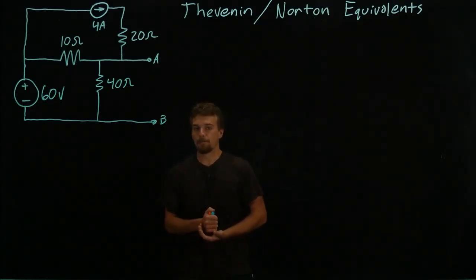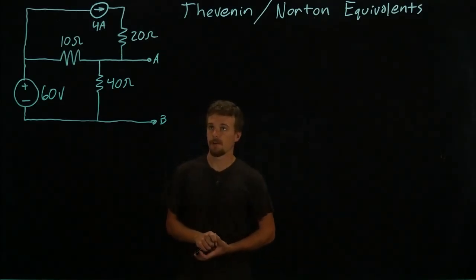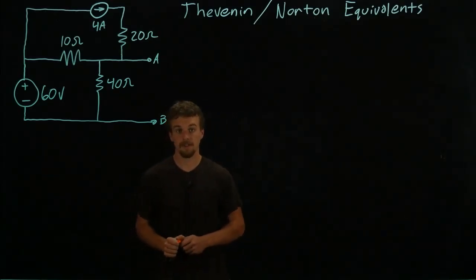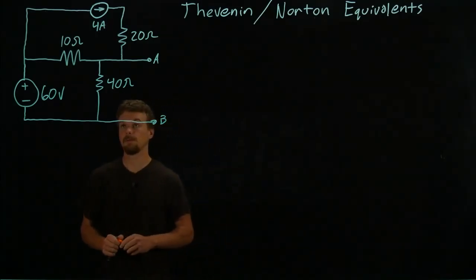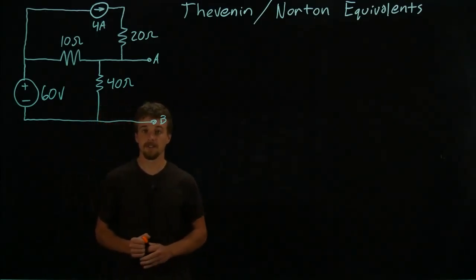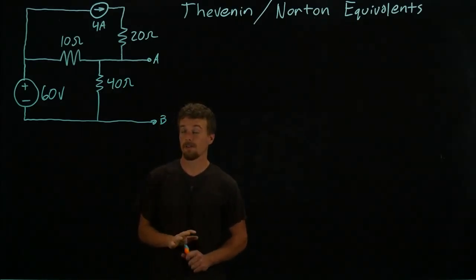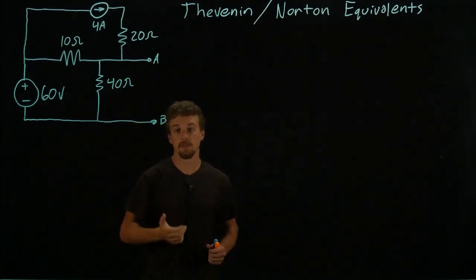All right, the first thing we'll solve for is our resistance. Now one way to solve for resistance, we'll see another way at the end of the video. One way to solve for resistance when you have a circuit like this is to set all sources equal to zero and just solve for the resistance between points A and B.